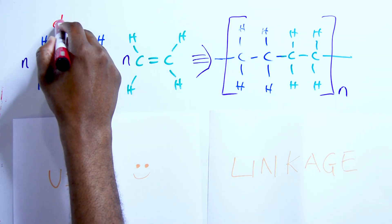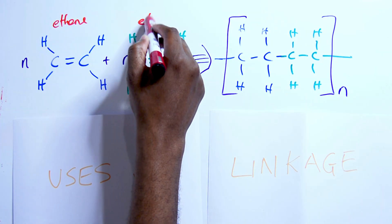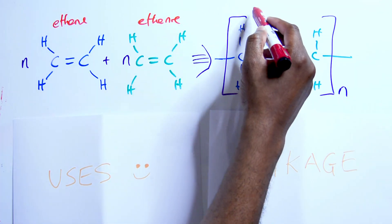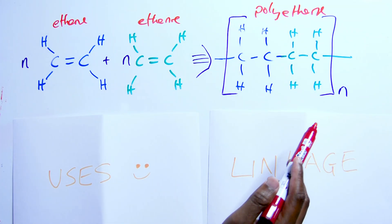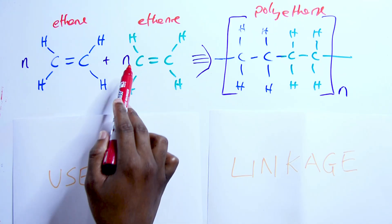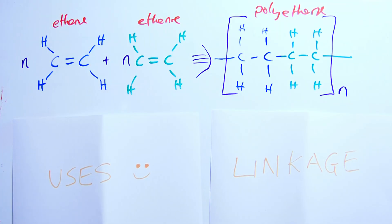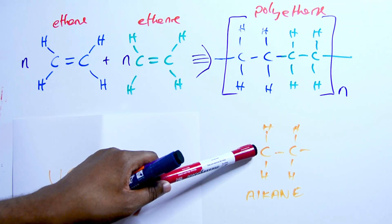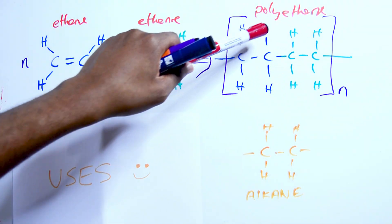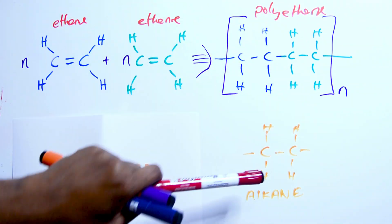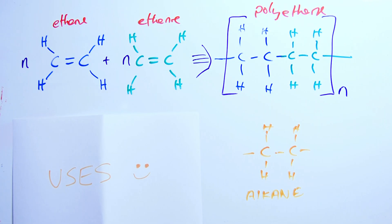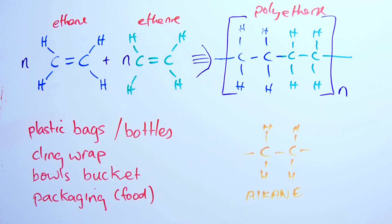First on the list, we have ethene joining up with another ethene to make polyethene. What's the linkage with ethene? The linkages are alkane type — if you watch where the link is occurring between the green and the blue, I put them in separate colors, you'll see that it's an alkane type linkage. The uses of polyethene are numerous: plastic bags, bottles, cling wrap, bowls, buckets, and food packaging.